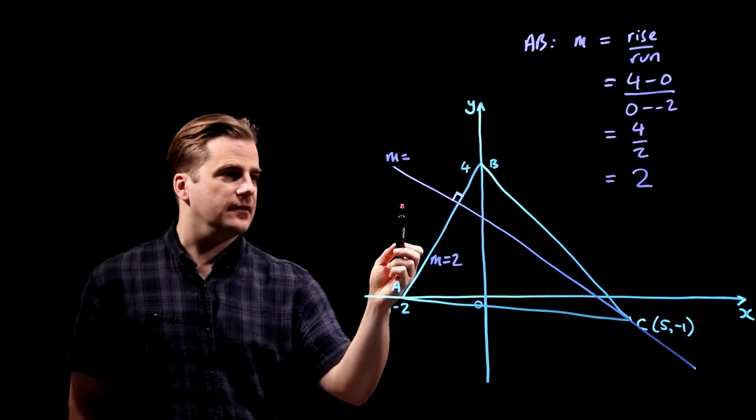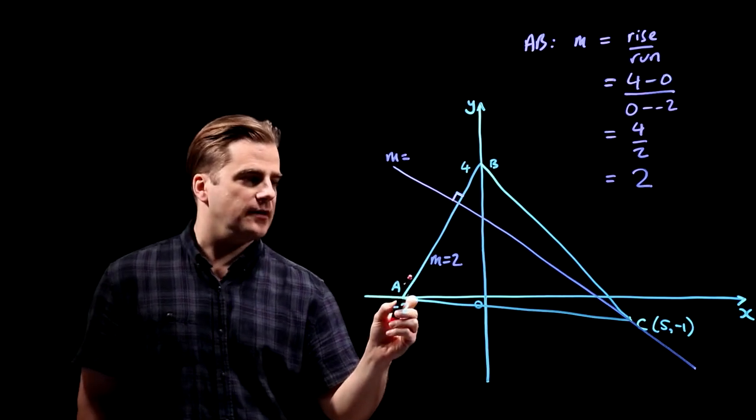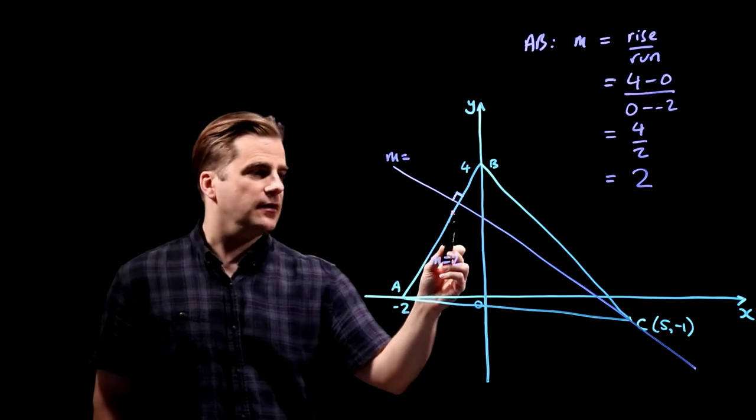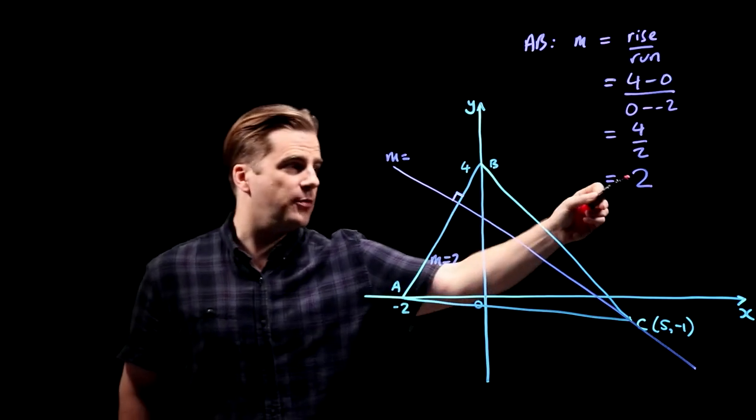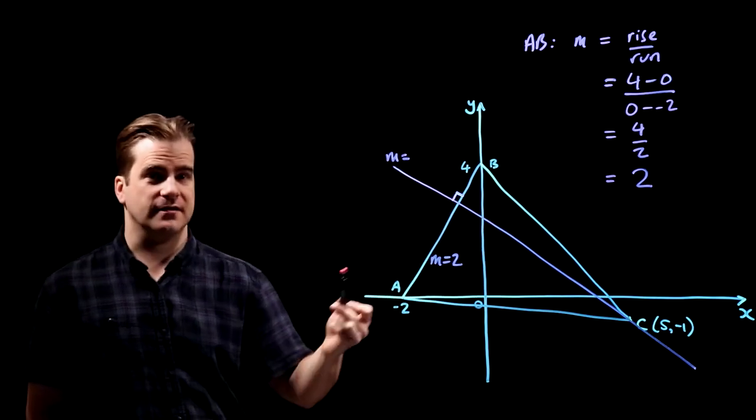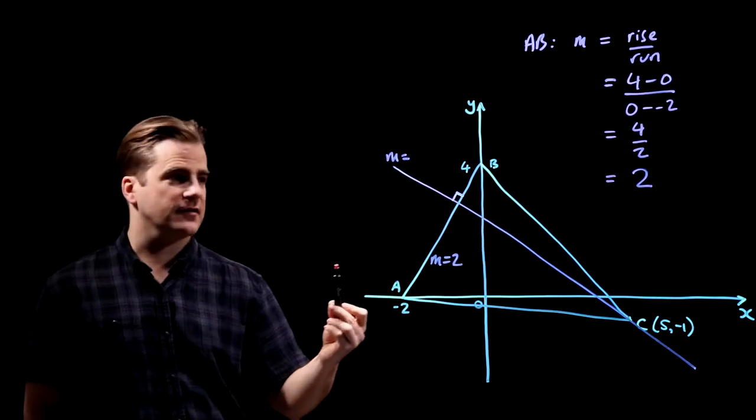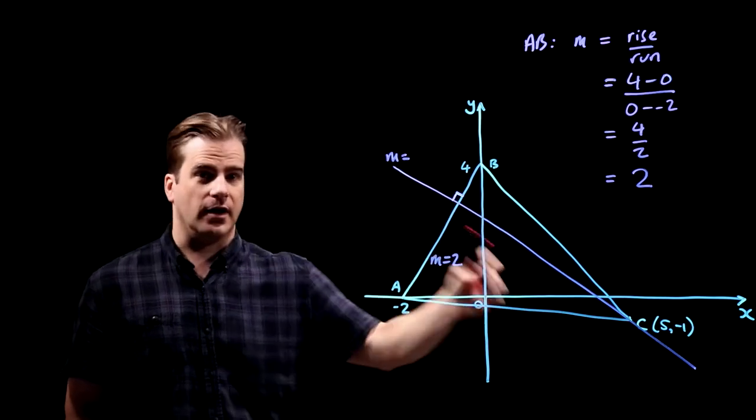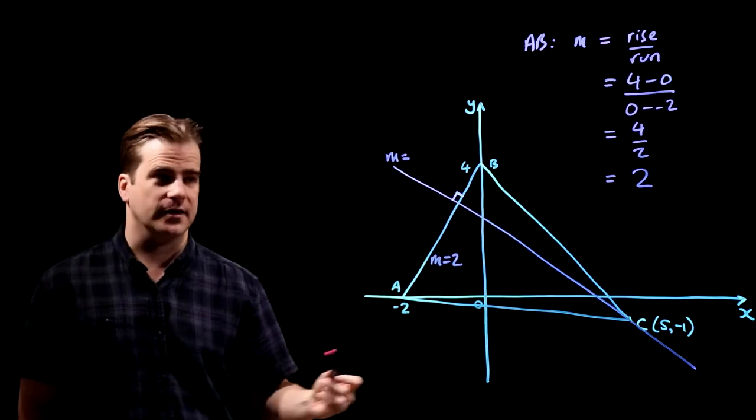And like I said, if you know the gradient of one line and another one's perpendicular, you put that over one and change the sign, the negative inverse. That's how you go from the gradient of one line to the lines perpendicular to it.